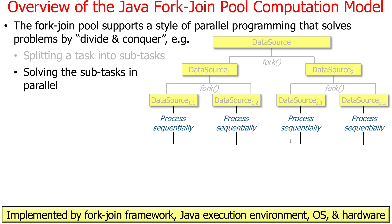Once you've got things split to the point where they can't be split any further — when they're at their minimal, atomic size — then you go ahead and solve all the problems. You have a bunch of subtasks, and all those subtasks get solved in parallel, even though each subtask is doing its processing sequentially. Under the hood, parallel processing is done by the fork-join framework in conjunction with other runtime capabilities: the Java virtual machine, the operating system kernel, the hardware cores, and so on.